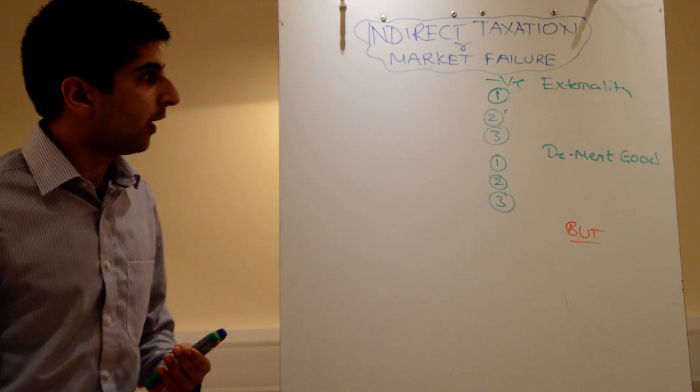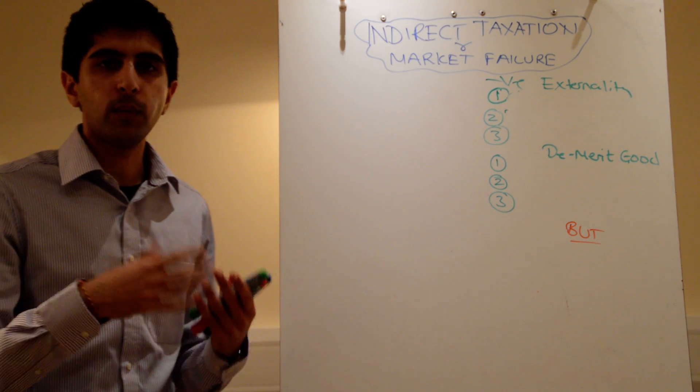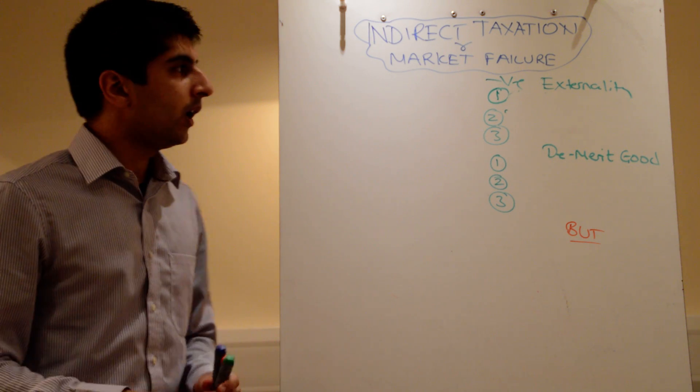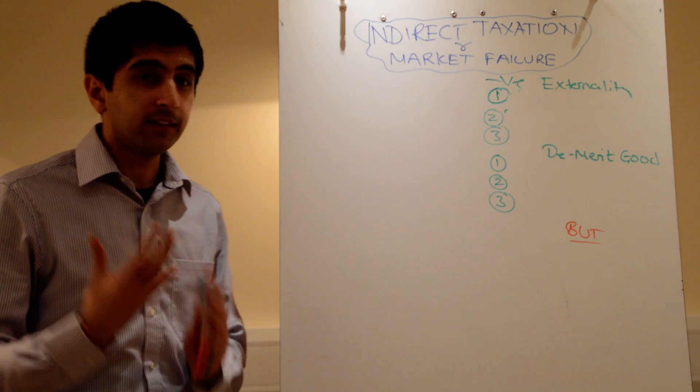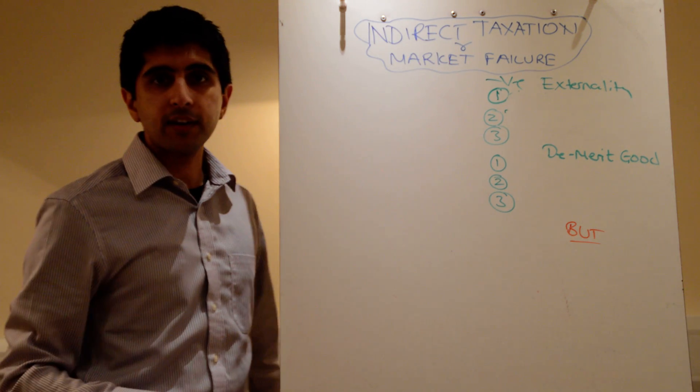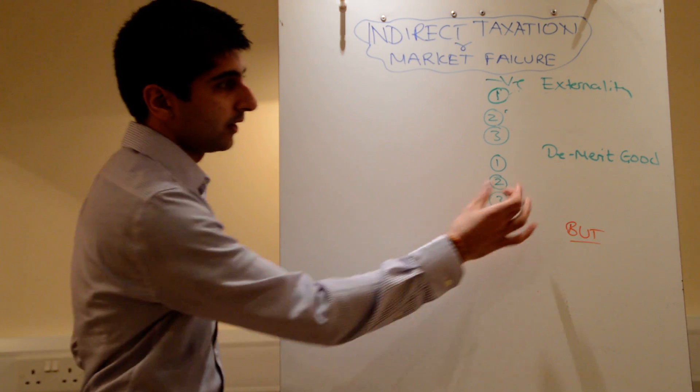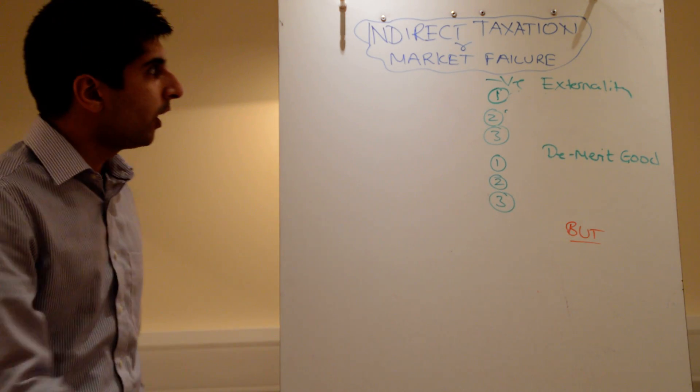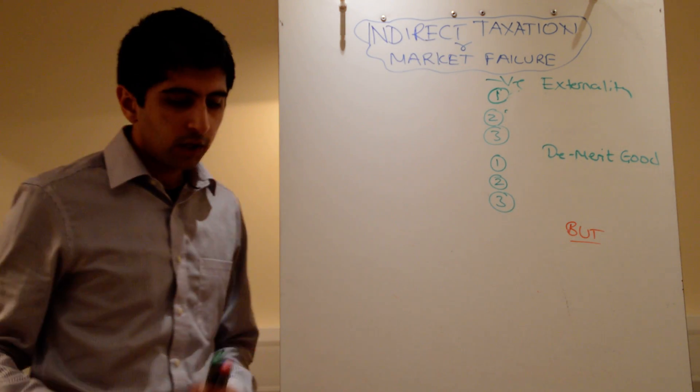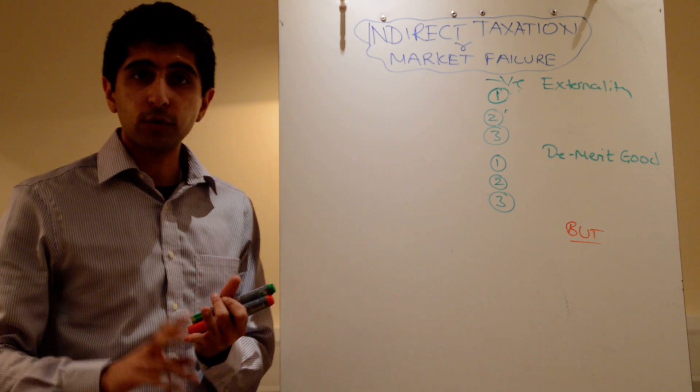We know markets can fail when there are negative externalities and when there are demerit goods. Therefore, there is rationale for the government to intervene, and one way they can intervene is by imposing indirect taxes on goods and services that are demerit goods or goods and services that generate negative externalities.